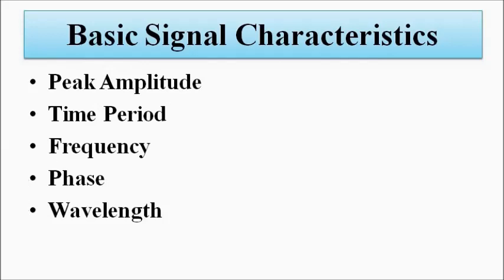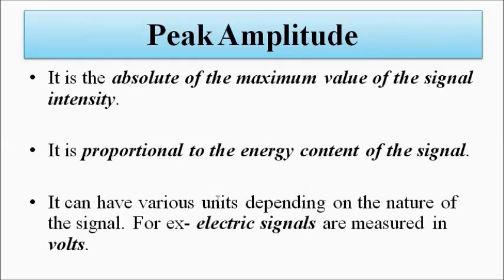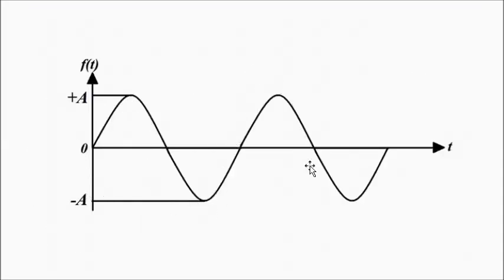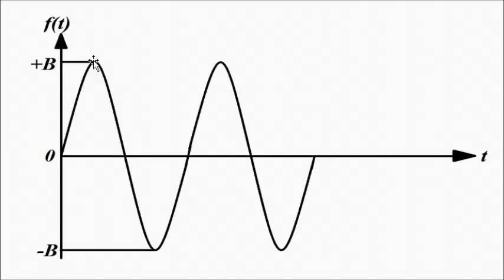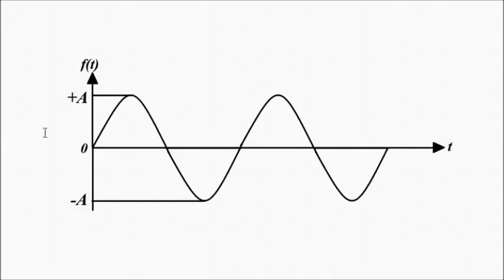The first characteristic is peak amplitude. Peak amplitude is the maximum value of the signal — the absolute value of the maximum intensity the signal reaches. Suppose we have a sinusoidal waveform; the peak point where it reaches its highest value on the amplitude axis is the peak amplitude. Both positive and negative peaks exist, but since it is the absolute value, it is always positive. If we have two waveforms A and B, and B reaches a higher maximum than A, then B has a greater peak amplitude.